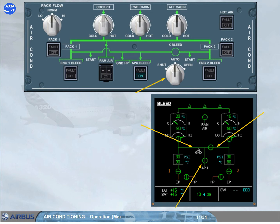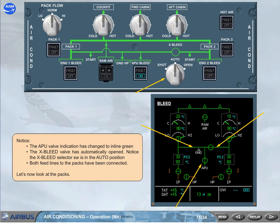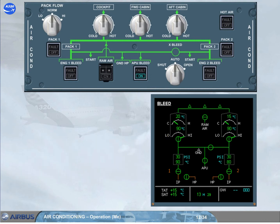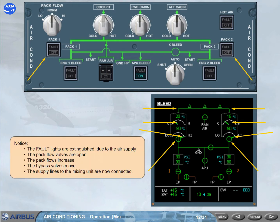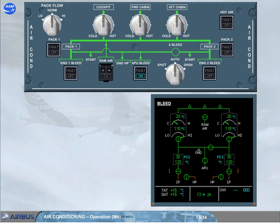Let's now look at the packs. Notice the fault lights are extinguished due to the air supply. The pack flow valves are open. The pack flows increase. The bypass valves move. The supply lines to the mixing unit are now connected. Both packs are now providing air conditioning.